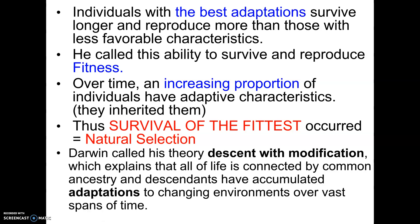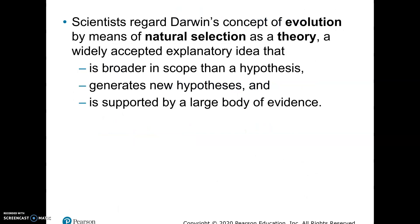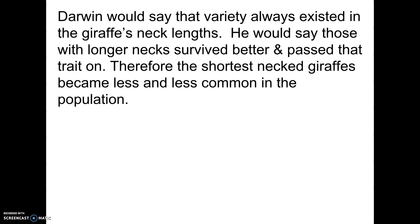He also called his theory descent with modification — descent, meaning offspring come out with different modifications, new combinations of genes from their parents. Adaptations accumulate over time, so organisms become better fit for their environment through natural selection. Scientists consider this a theory, not a hypothesis, because it's talking about something much bigger and is supported by a huge body of evidence. We have all kinds of evidence, which we'll talk about in our next lecture, that supports that natural selection happens and that organisms become more fit to their environment over time.